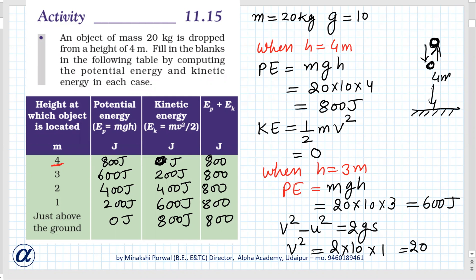The conclusion of this activity: when an object falls from a certain height, potential energy keeps on decreasing and kinetic energy goes on increasing. The sum of potential energy and kinetic energy at any point is constant — it's always 800 joules. This demonstrates conservation of mechanical energy.